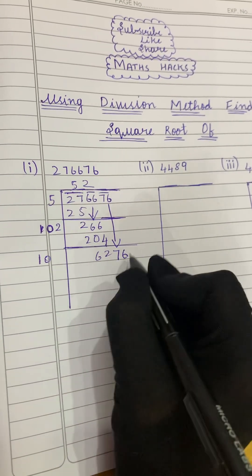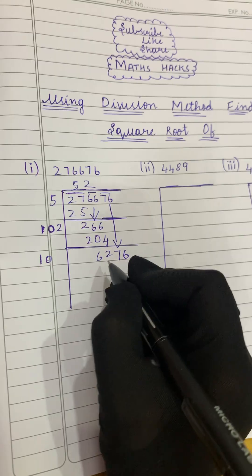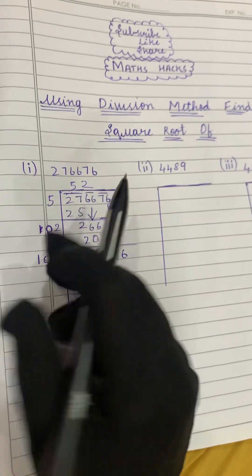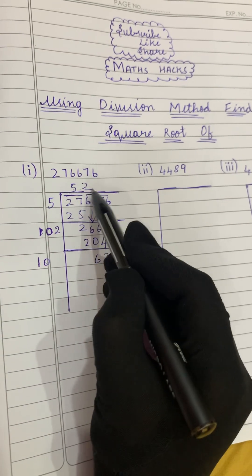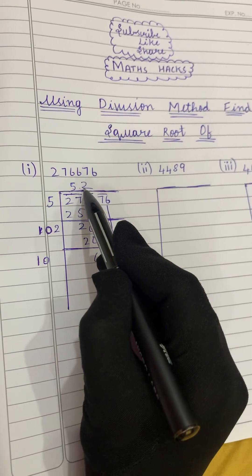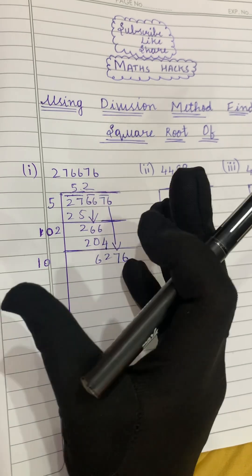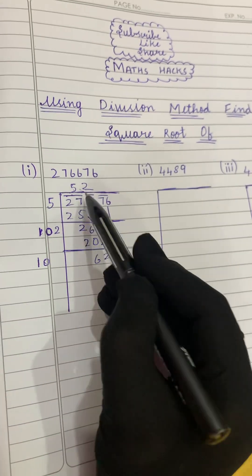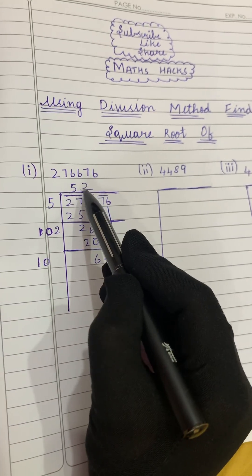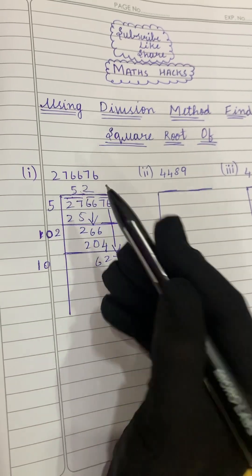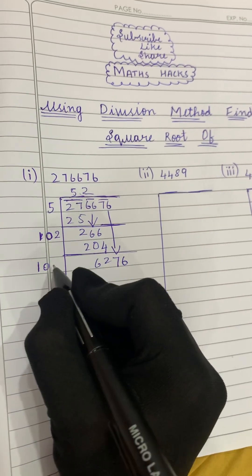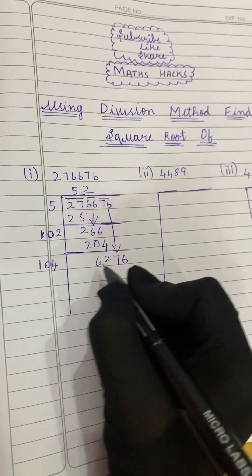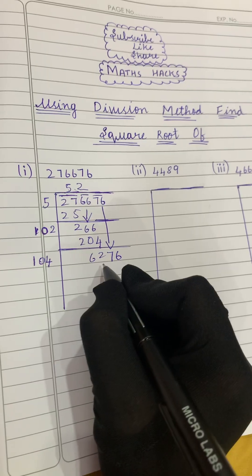We copy the same 10 here. Now we have two digits on one side and four digits on the other. The next step is to double the current quotient again. Doubling 2 gives 4, so we now have 104.